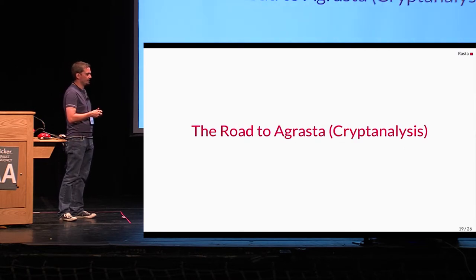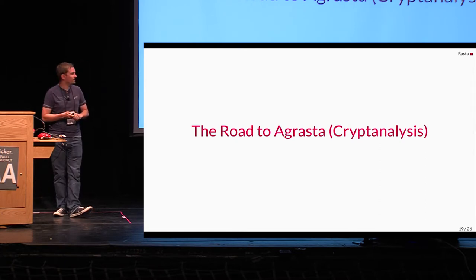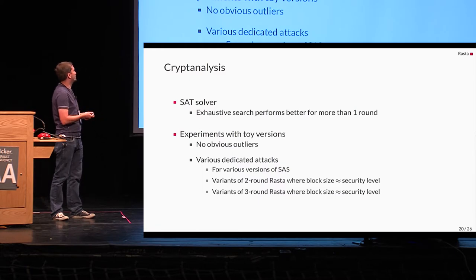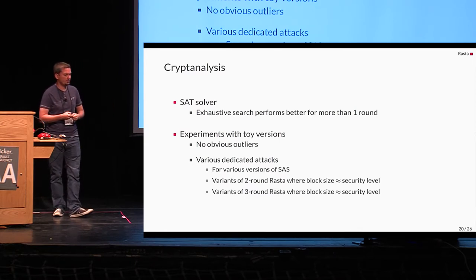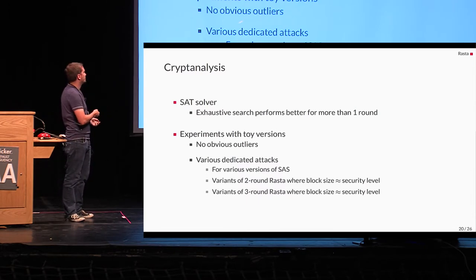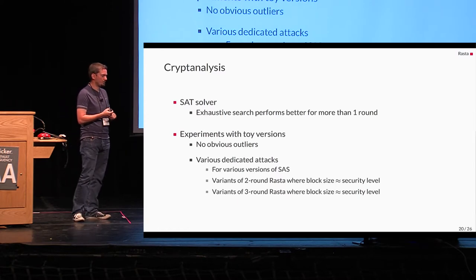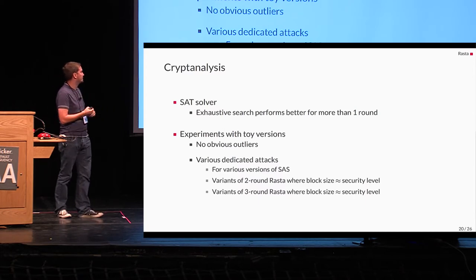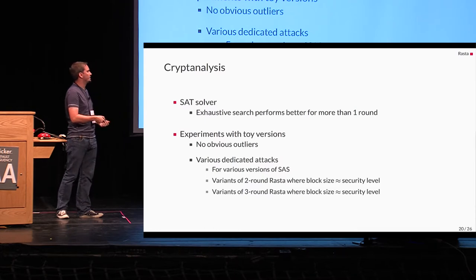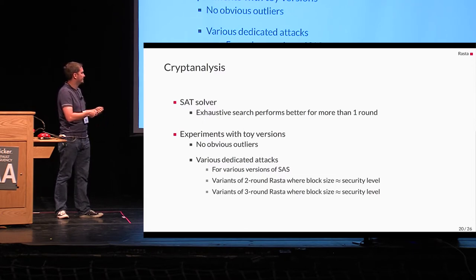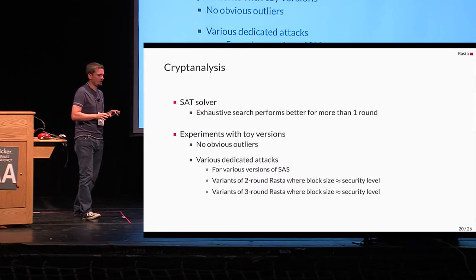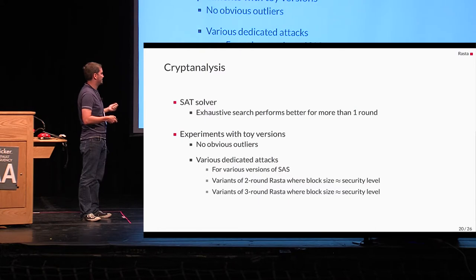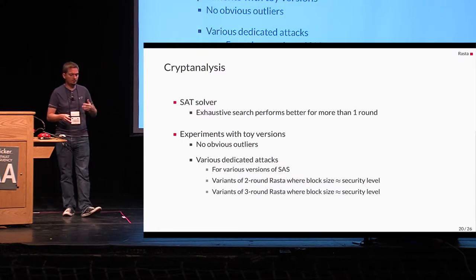And now we come to cryptanalysis or how we get to the parameter set for Agrasta. Besides computing such bounds, we also tried to break the cipher. So for instance, we tried to use a SAT solver. And the result was that exhaustive search performs better for most amounts of Rasta. We also did various experiments with toy versions. For instance, counting the number of possible monomials you get at the output. And we did not observe any obvious outliers here. And we also tried various dedicated attacks, for instance, on SAS of various versions where you just have a nonlinear layer and affine layer and a nonlinear layer. And also variants of two rounds and three rounds of Rasta where the security level is approximately the block size. And how does such an attack on three-round Rasta where the block size is approximately the security level look like? I will show you next.